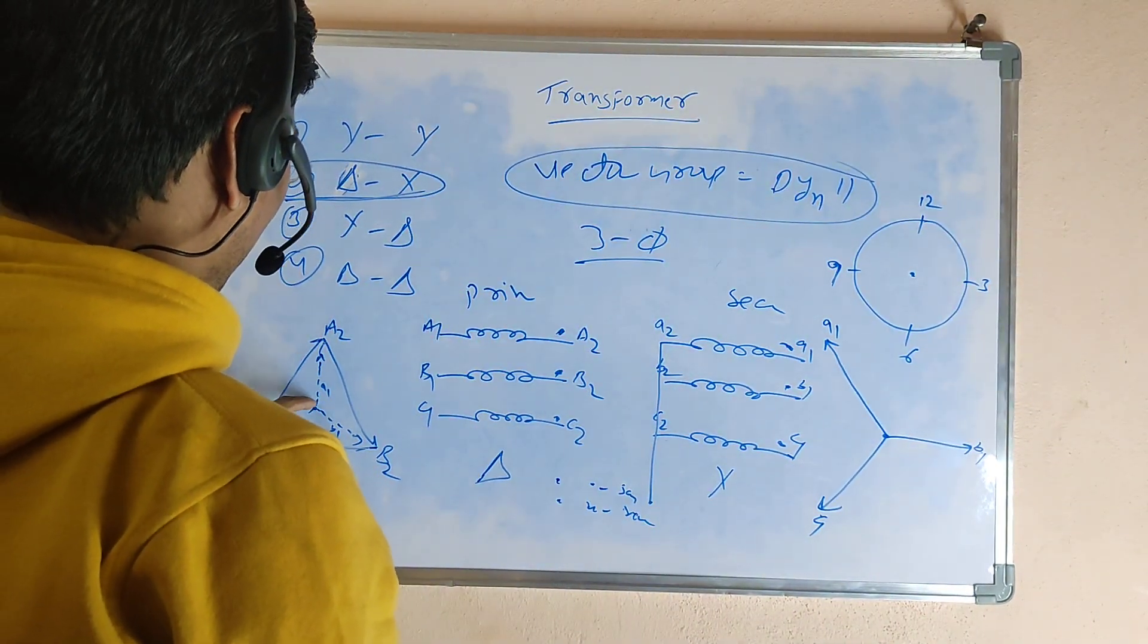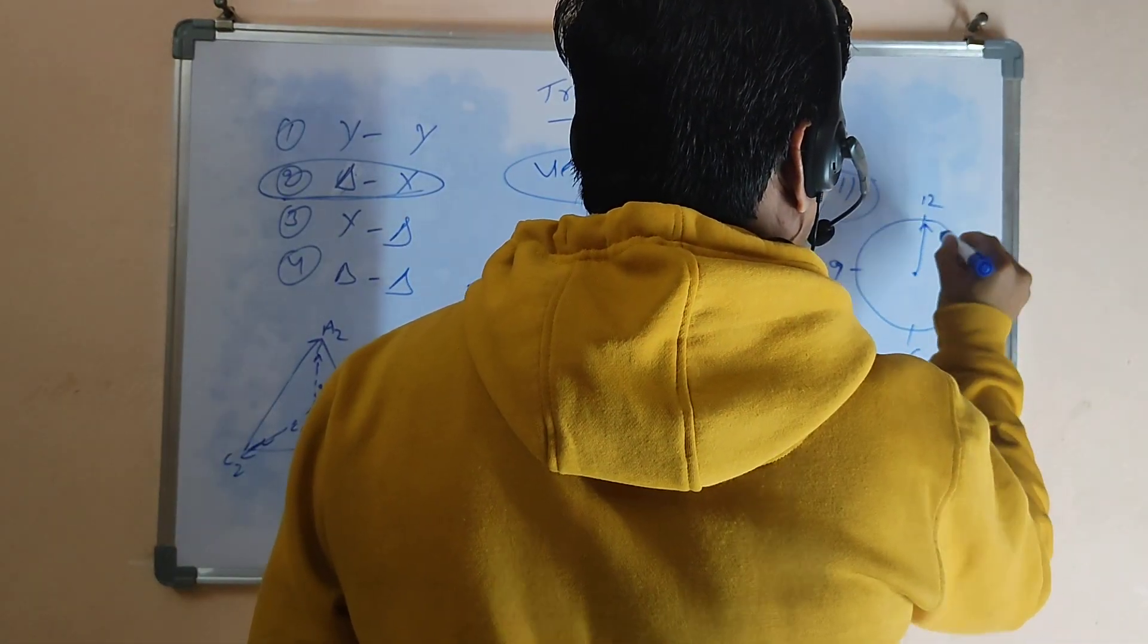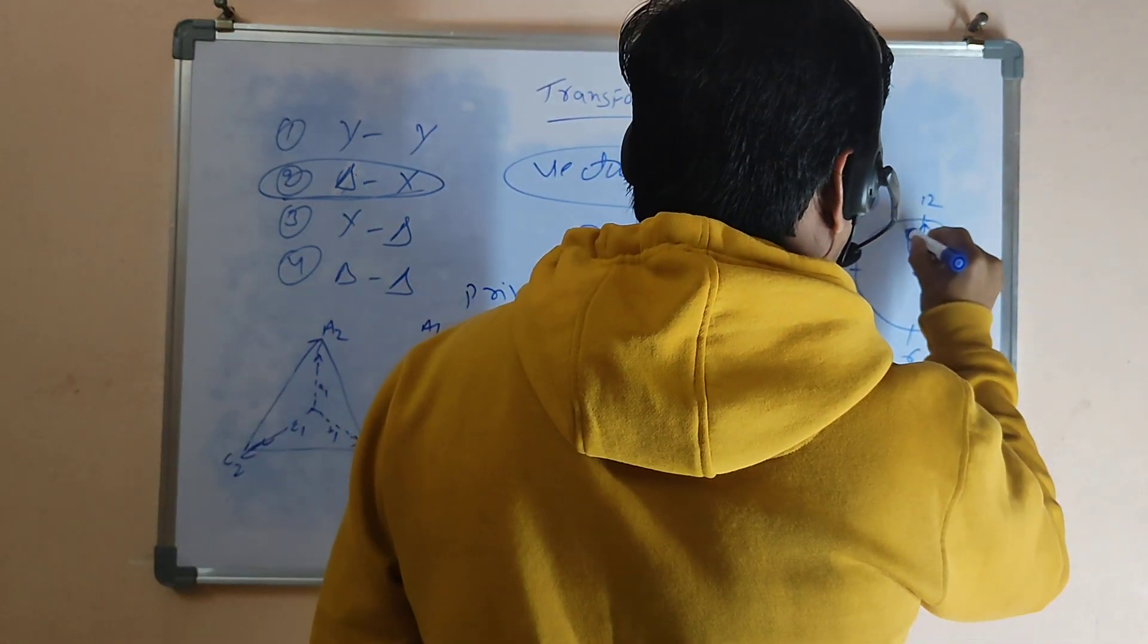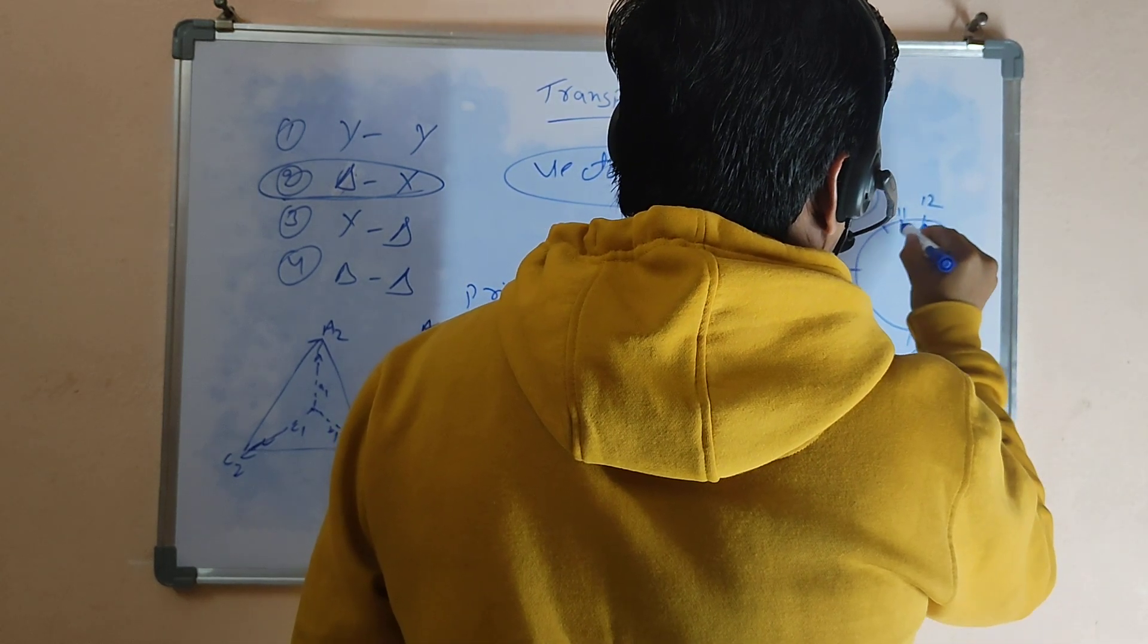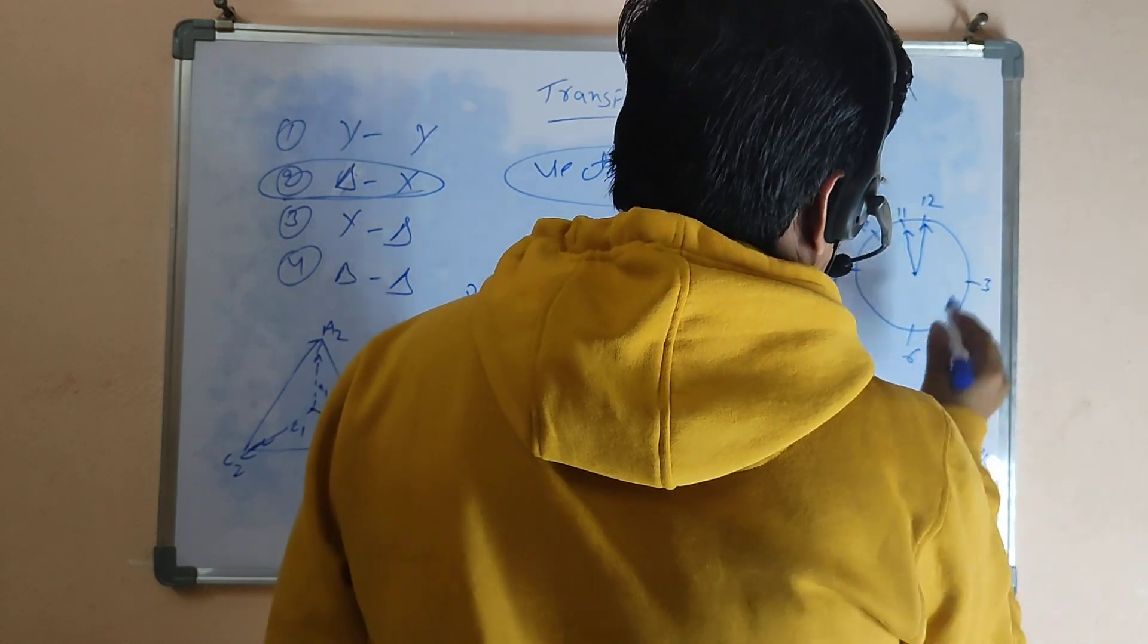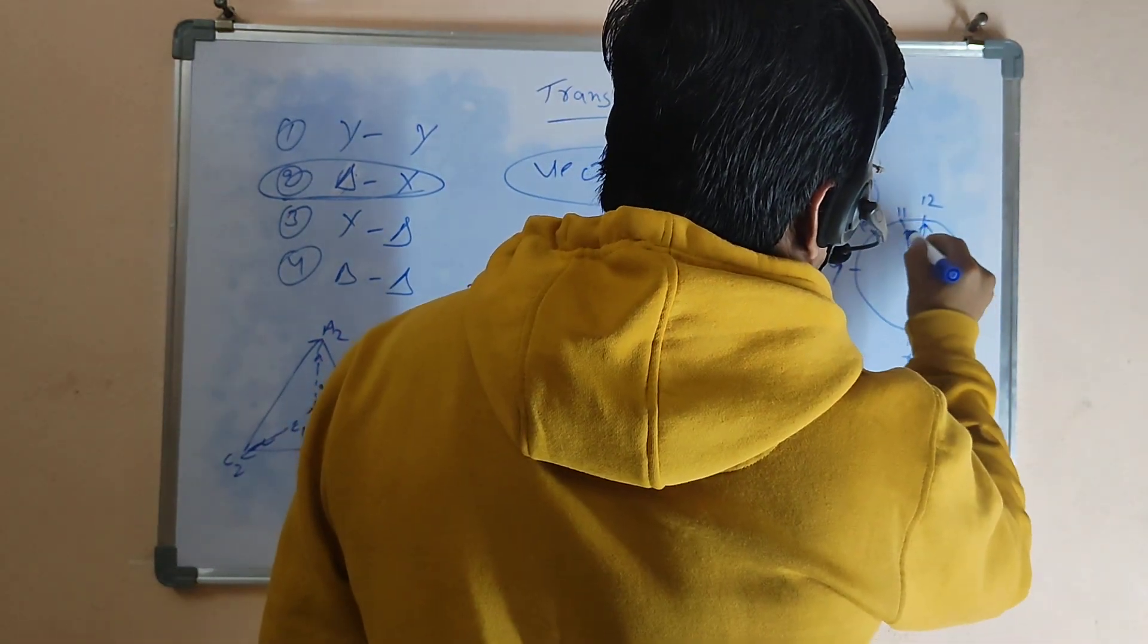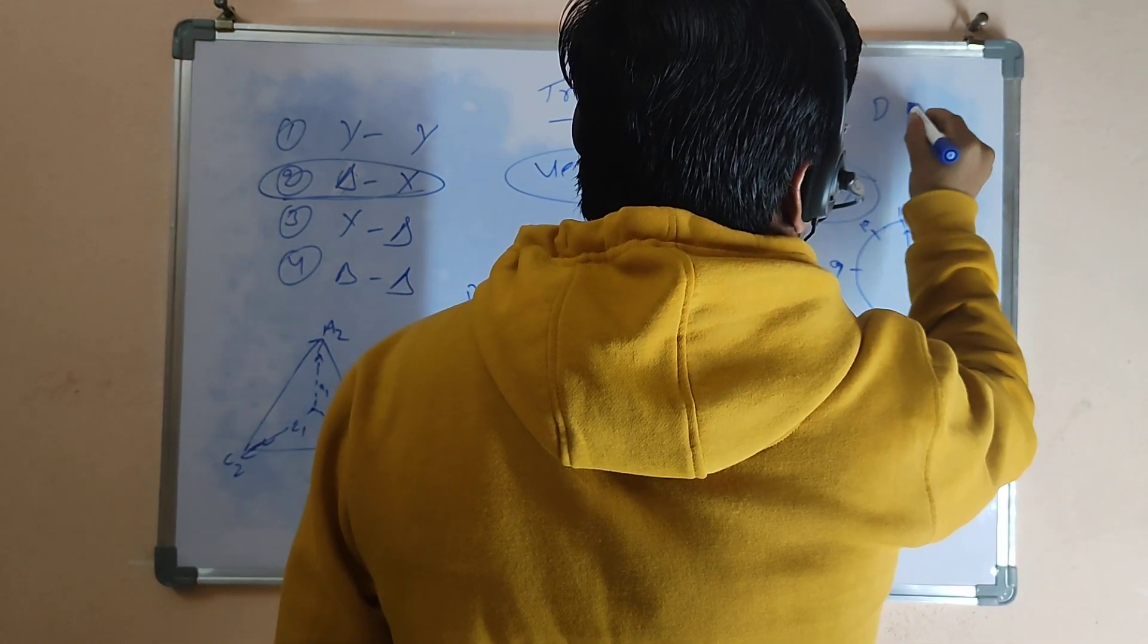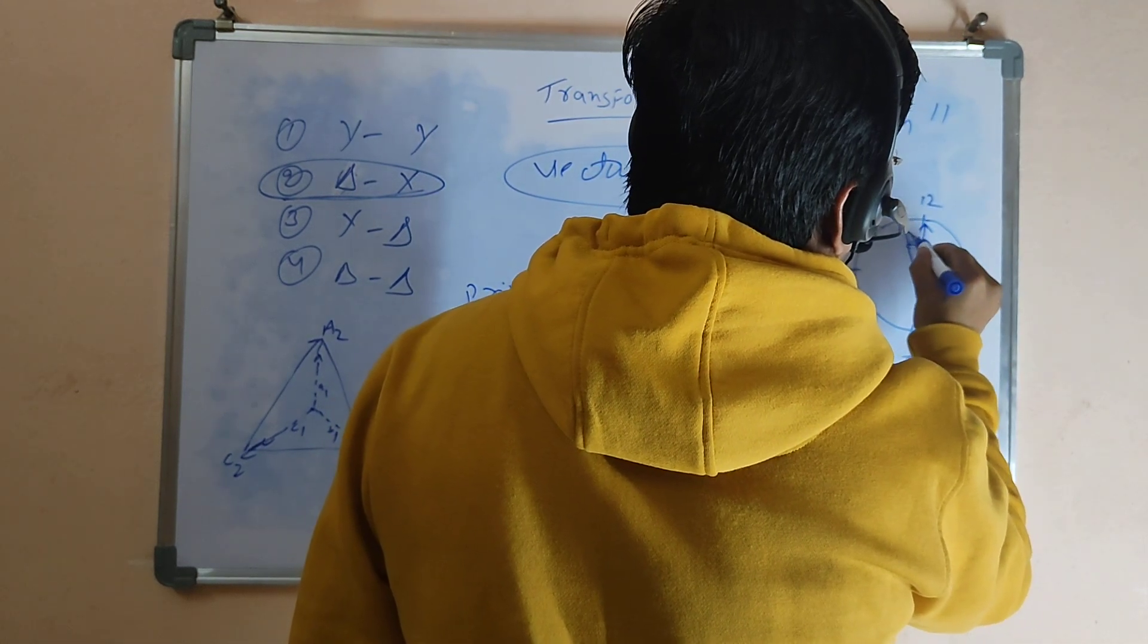Now we draw: this is the A1. This is 11 o'clock. The time is 11 o'clock. That is nothing but D, Y, N, 11 o'clock. That means the angle between this and this is 30 degrees.